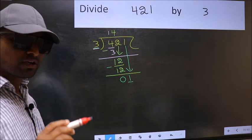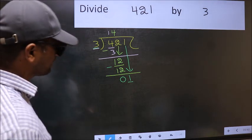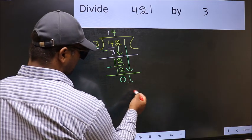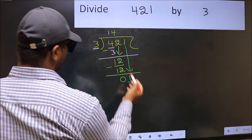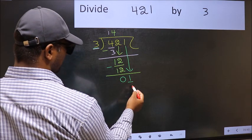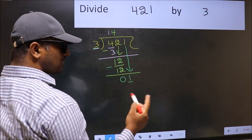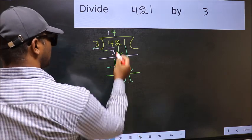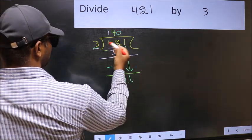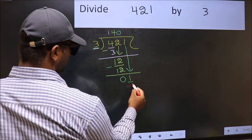Instead, what you should think of is, what number should we write here? If I take 1 here, I will get 3. But 3 is larger than 1. So what we should do is, we should take 0. So, 3 into 0, 0.